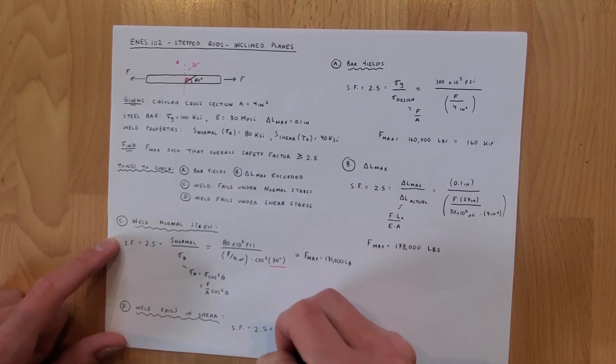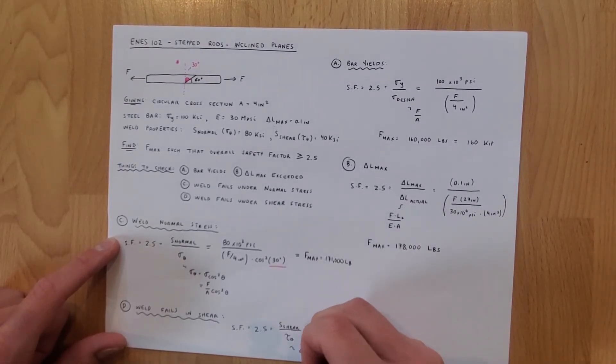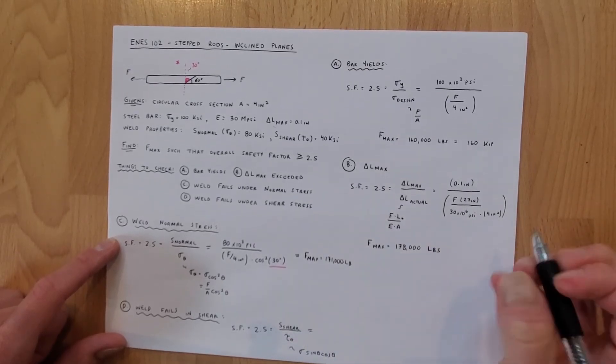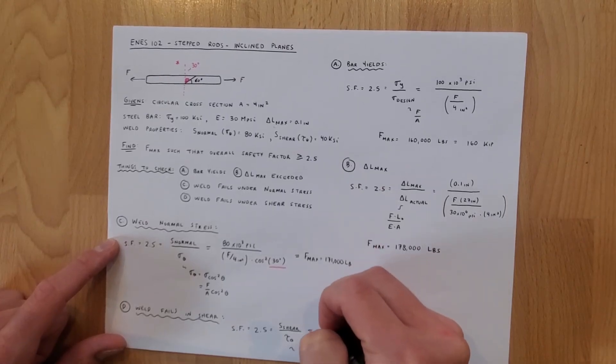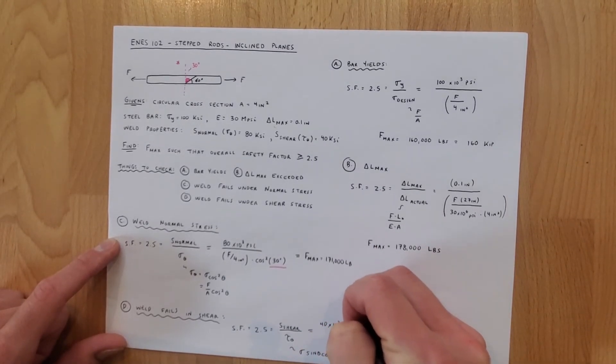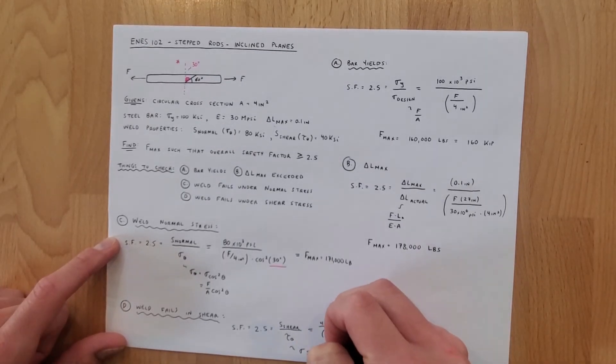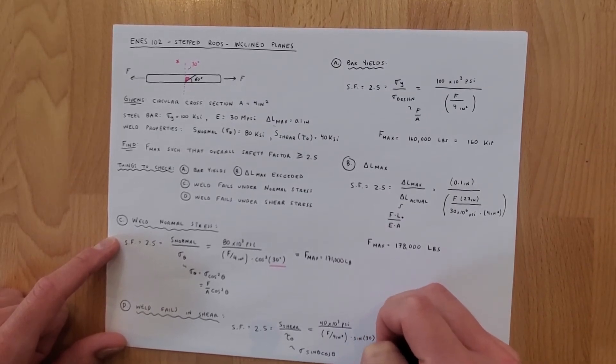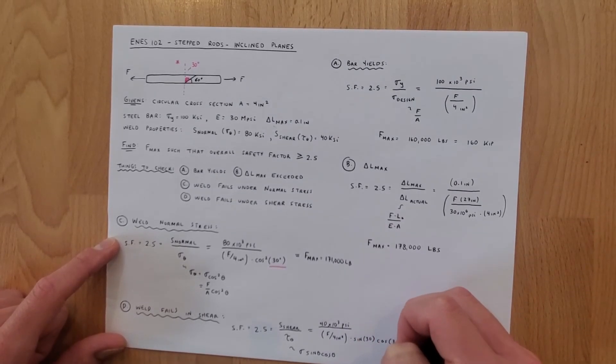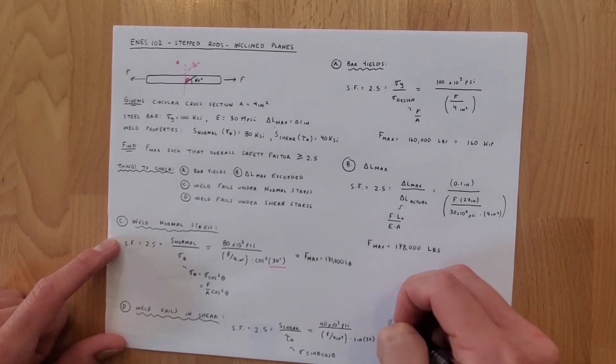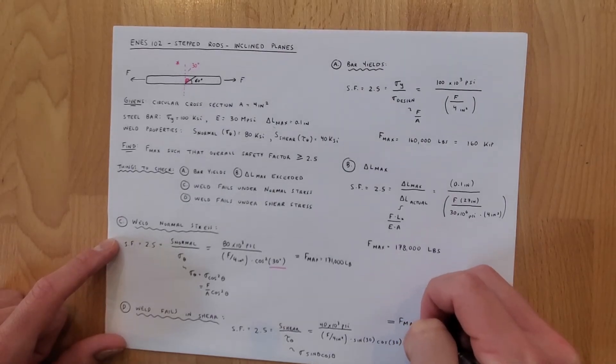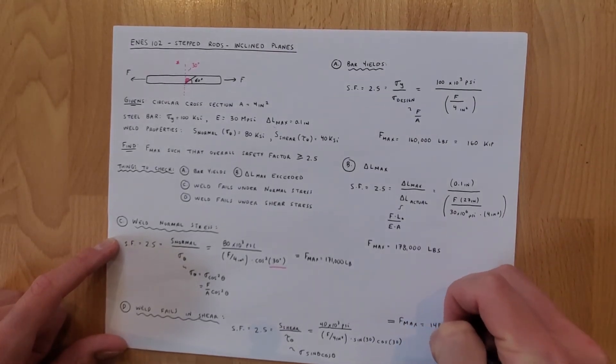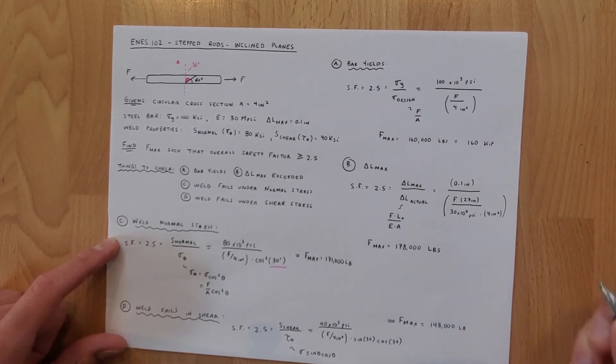Well again we use our safety factor equal to 2.5 we set that equal to s shear which is the strength of our weld in shear. We'll divide that by tau theta which from before remember our equation for tau theta is sigma sine theta cosine theta. So we plug in everything we know this is 40 times 10 to the third psi divided by f over four inches squared times sine of 30 cosine of 30.